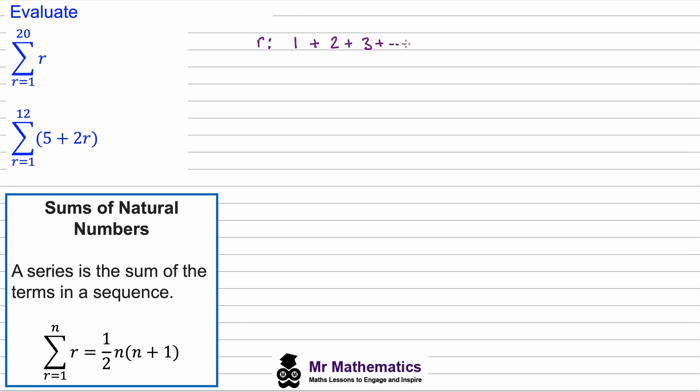So the penultimate term would be 19 and the final term would be 20. So we've got 20 terms in this series. Now we could add up all of these directly, but imagine if you had a thousand terms, that would become quite difficult.